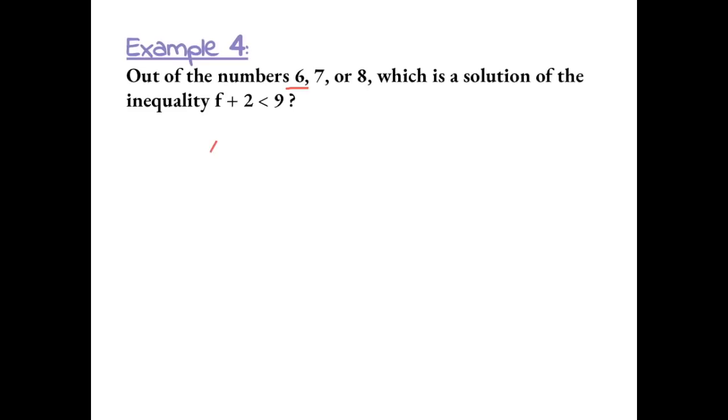Example 4: Out of the numbers 6, 7, or 8, which is a solution of the inequality f plus 2 is less than 9? Let's try plugging in each number, starting with 6. Plugging in 6 for f gives us 6 plus 2 is less than 9. Simplifying the left side, we get 8 is less than 9. Because this is a true statement, 6 is a solution.